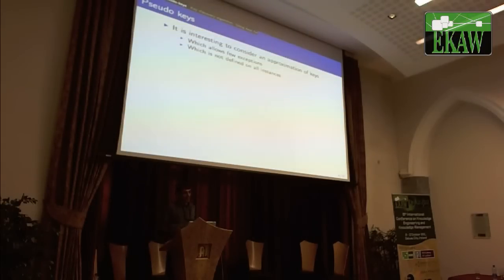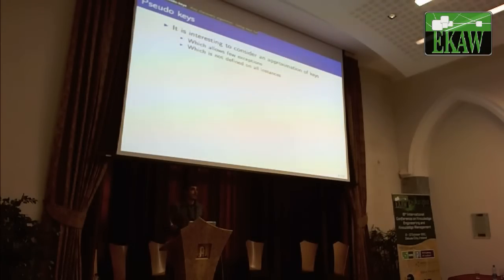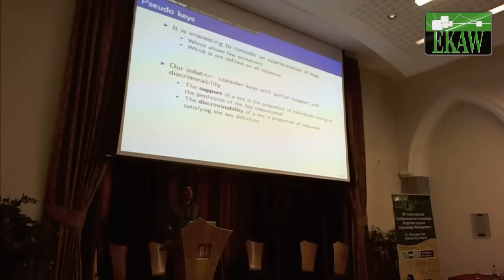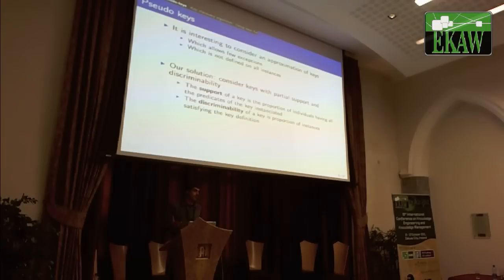Our idea is not to consider keys themselves but to consider approximations of keys — more specifically, exceptions to these keys. We want to find keys with few exceptions, and which are not defined on all instances, because in RDF some instances may not have certain properties defined. Our solution defines two measures: a support measure and a discriminability measure. The support captures the proportion of individuals for which a key is defined, and the discriminability measures the proportion of instances that satisfy the key.